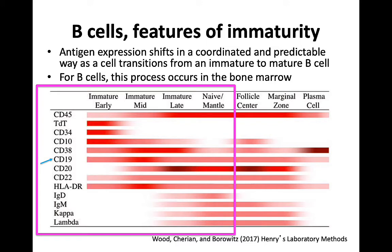Let's consider the transition from the immature early B-cell, or early stage 1 hematogone, to our naive but mature B-cell. One marker that's stable is CD19 — it's expressed throughout B-cell maturation and therefore is a great B-cell marker overall. CD45 expression is lower on immature B-cells, and the intensity of this marker increases as you transition to a mature cell, so immature B-cell populations usually have lower CD45.